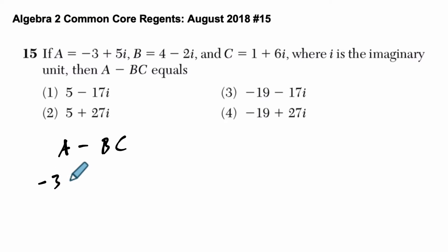So we have A, which is negative 3 plus 5i, minus the product of B and C. So 4 minus 2i, and 1 plus 6i. So I'm going to work out this product over here.